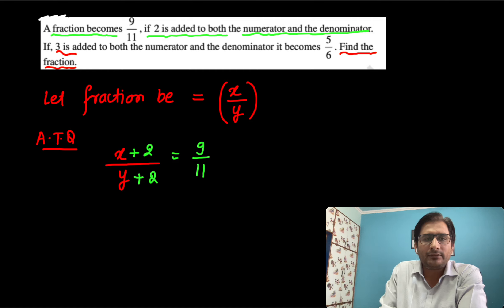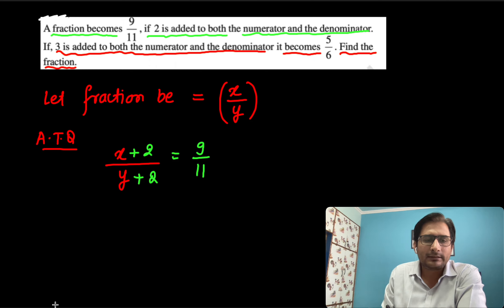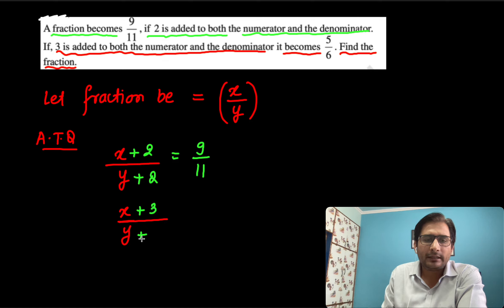One more condition is given: if 3 is added to both the numerator and denominator, the fraction becomes 5 by 6. So it is x upon y — if I add 3 to the numerator and 3 to the denominator, that fraction will become equal to 5 by 6.